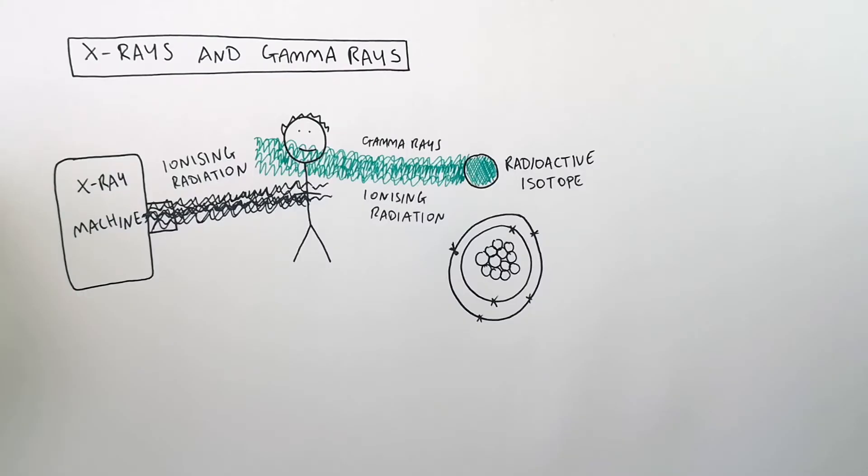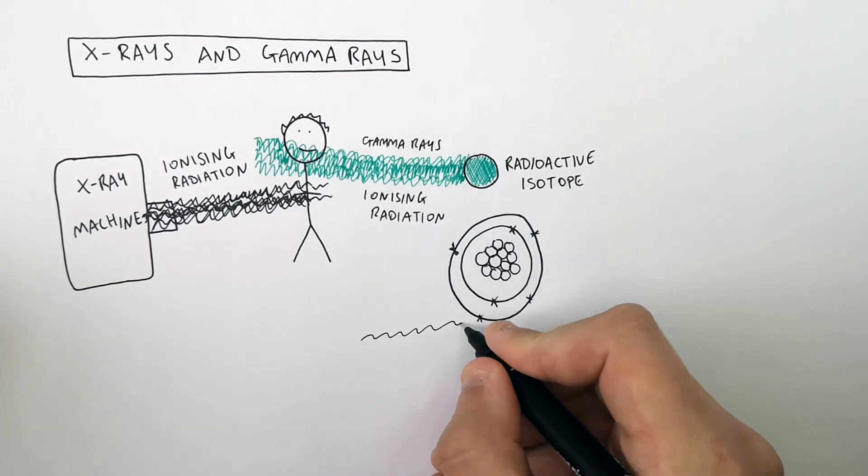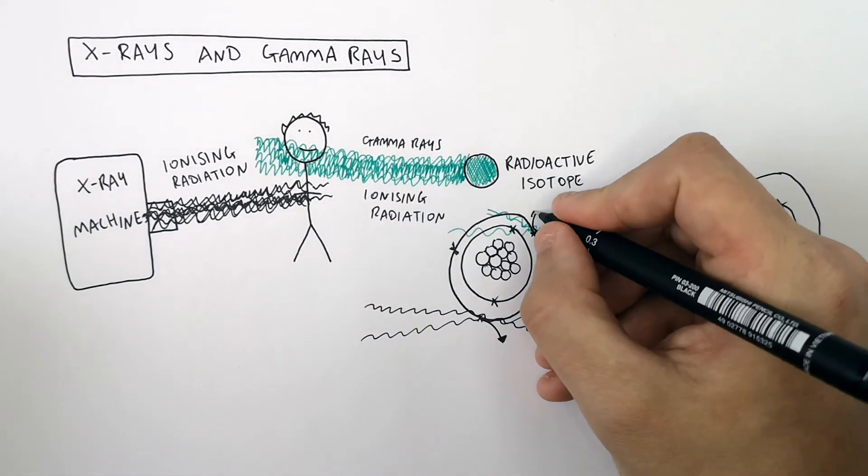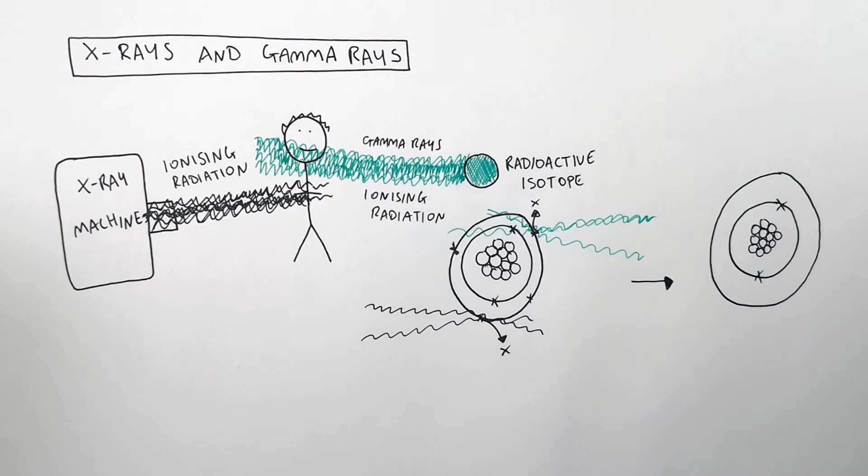So what happens is that x-rays are able to ionize atoms in your body and in your cells. They are going to cause electrons to be lost from the atoms, causing atoms in your cells to become ionized.